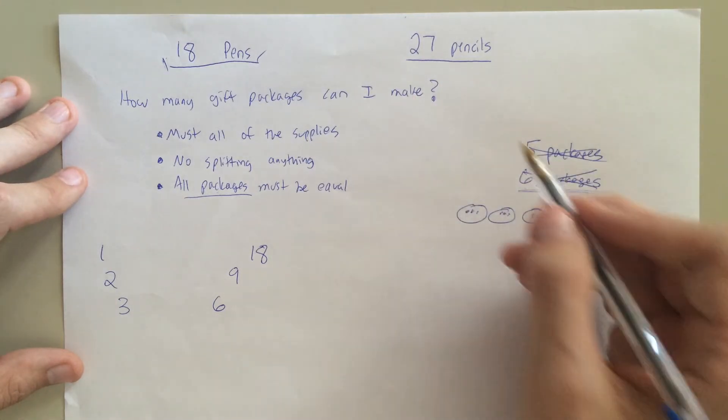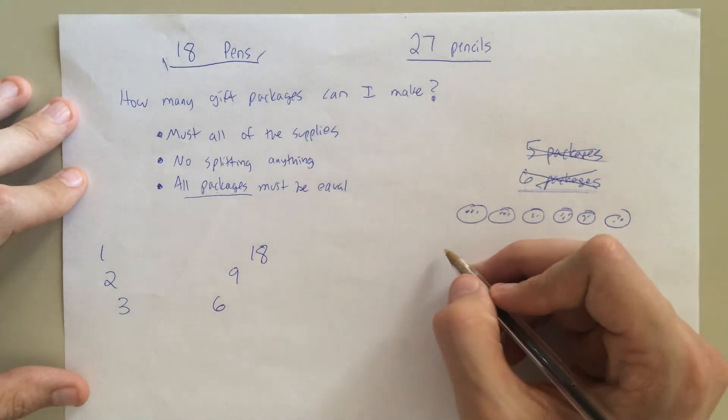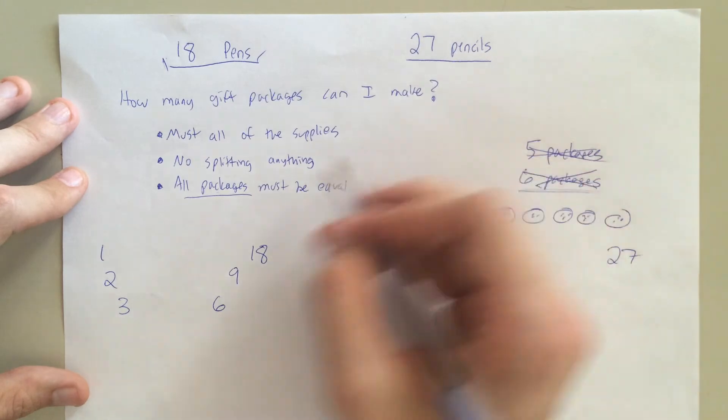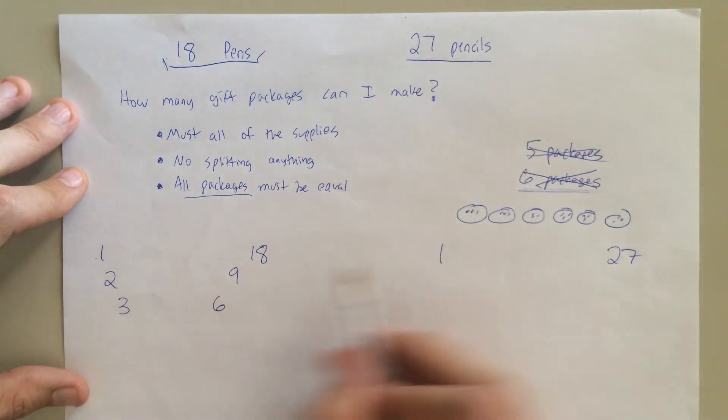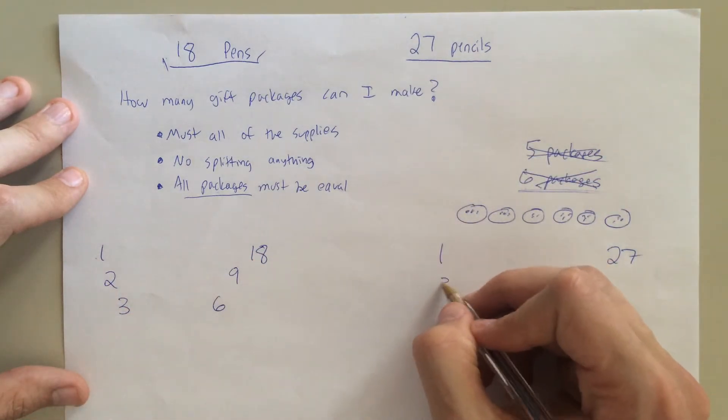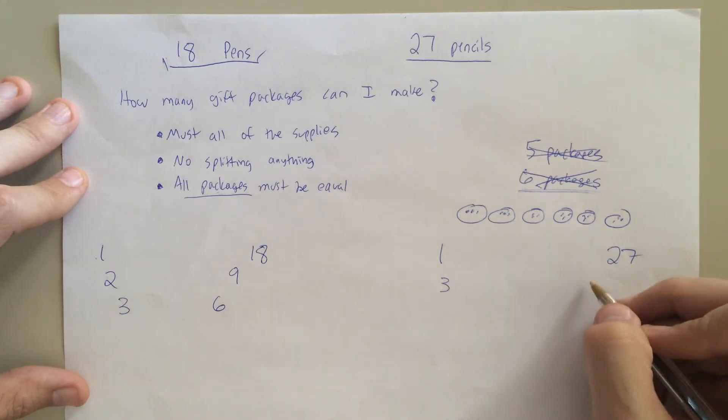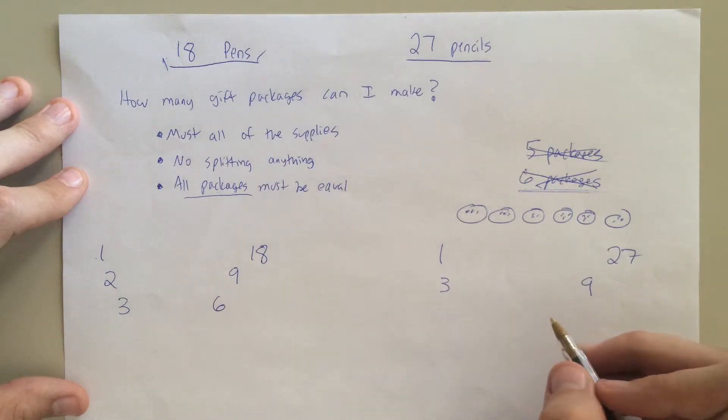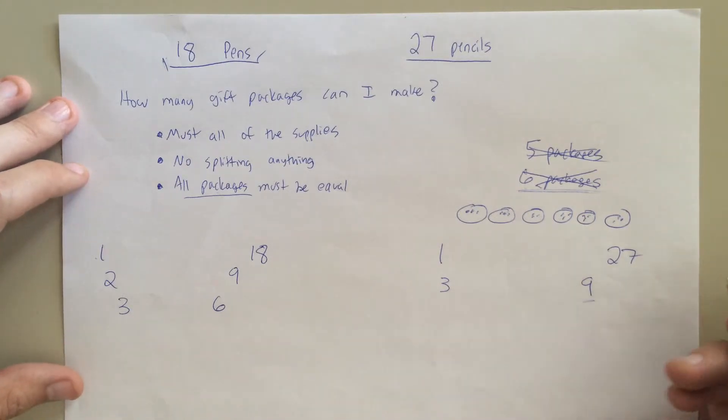So, let's do the same thing with our pencils. I can do one package of 27, or 27 packages of one. I don't think I can split this in half, because it's not even. Again, I'm starting small, working my way up. How about three? Well, that means I could probably do three, and that means I can also do nine. Four I don't think will work. Five I don't think will work. Six won't work. Seven won't work. Eight won't work. And nine will work because we already have it. So, nine times three. I think that's it as well.